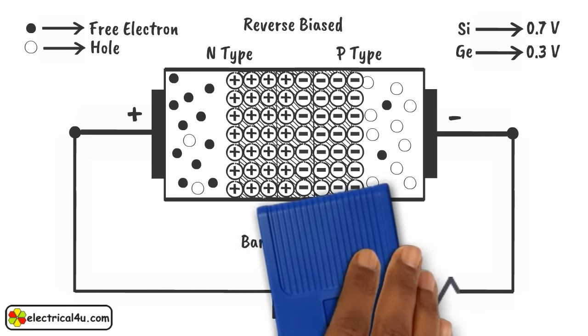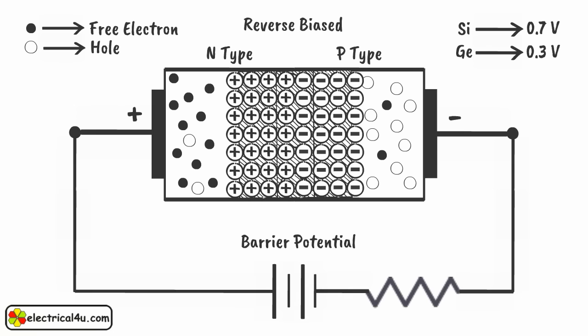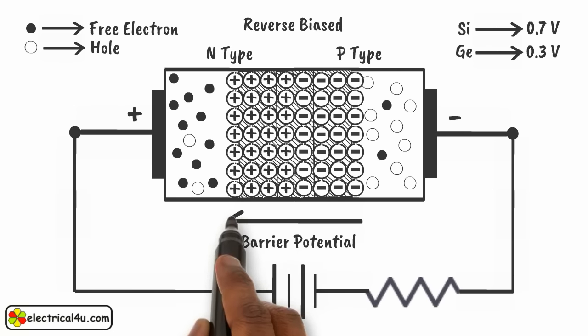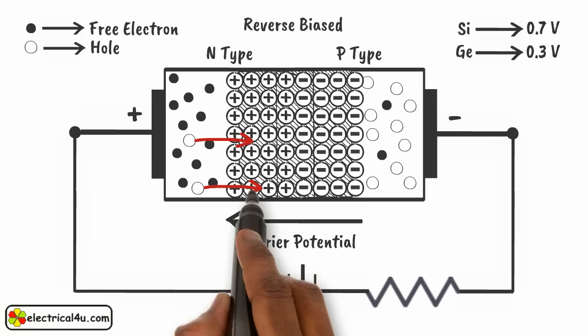In this situation, current does not flow through the diode because free electrons in the N-type region and holes in the P-type region cannot cross this wide depletion region due to the electrostatic force of the applied reverse voltage. However, there are always some thermally generated holes in the N-type semiconductor and free electrons in the P-type semiconductor. We call these charge carriers minority charge carriers, and they are also present in the depletion region. Due to the electrostatic force of the applied reverse bias voltage, these minority carriers will smoothly flow through the diode.